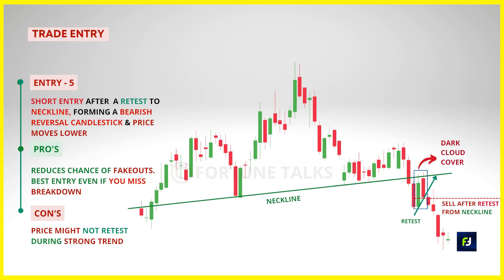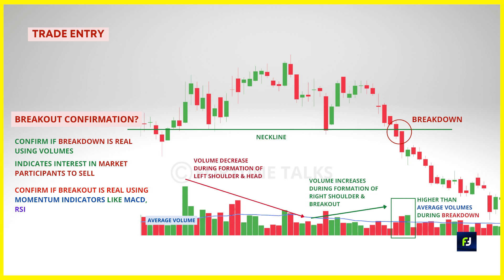If the pullback is deep with large-bodied candles, wait for the price to retest the neckline — the previous support turned resistance level — as per the principle of polarity. Observe if the price retests the neckline and wait for a price rejection in the form of bearish reversal candlesticks like shooting star, bearish engulfing pattern, or evening star. If you find a price rejection, you can go short on the very next candle. The retest technique lets you time your entry and short the market at better prices, but the market will not always do a retest. Also, volume should decrease during the left shoulder and head and rise during the right shoulder and breakout.